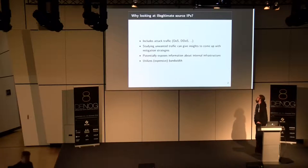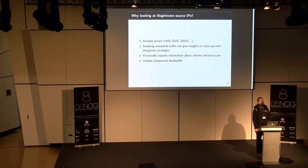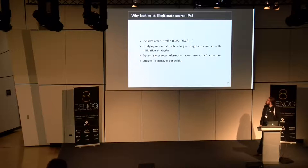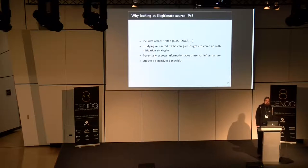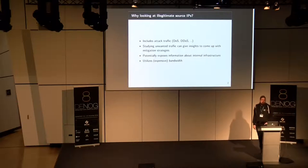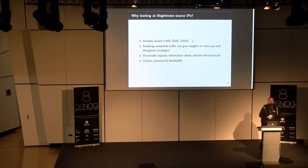Why should we look at this kind of traffic? We see a lot of attack traffic in these data packets. All of the recent denial-of-service attacks were distributed denial-of-service attacks, often using spoofed addresses for DNS or NTP amplification attacks — a huge problem still on the internet. By studying this unwanted traffic, we hope to get some insights and come up with mitigation strategies. If we can understand what kind of traffic this is, we can hopefully identify the sources.